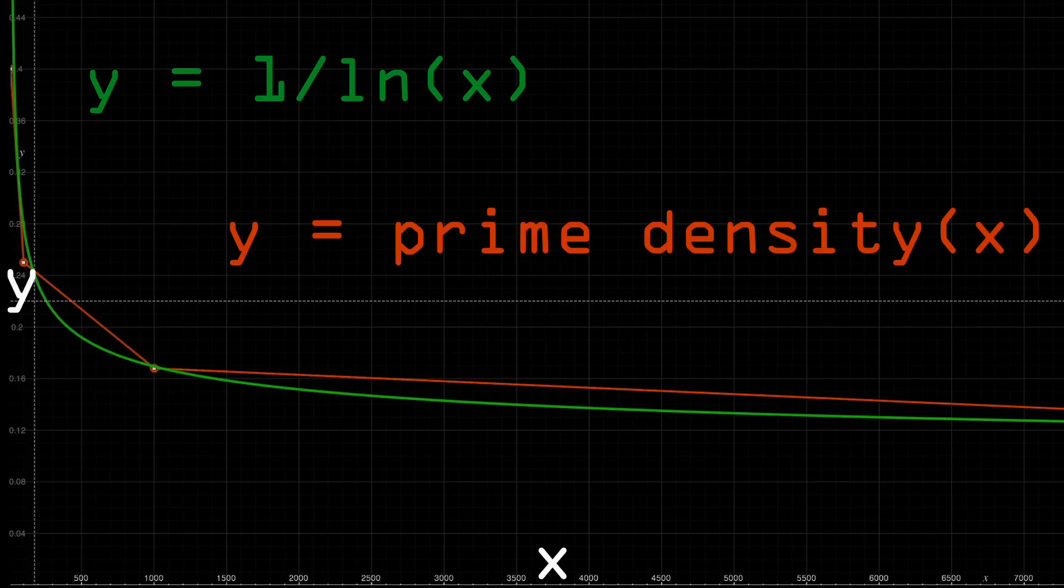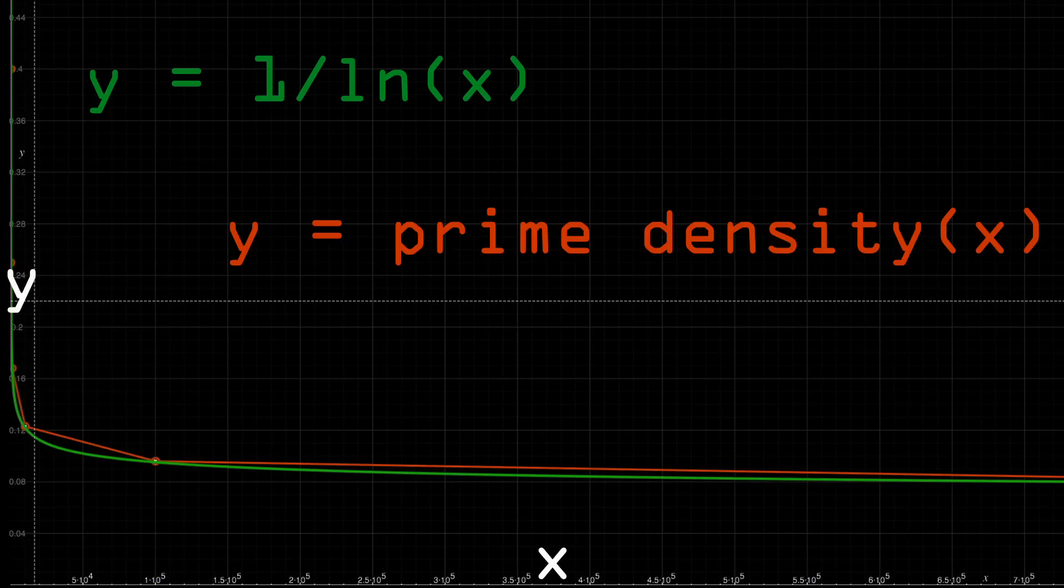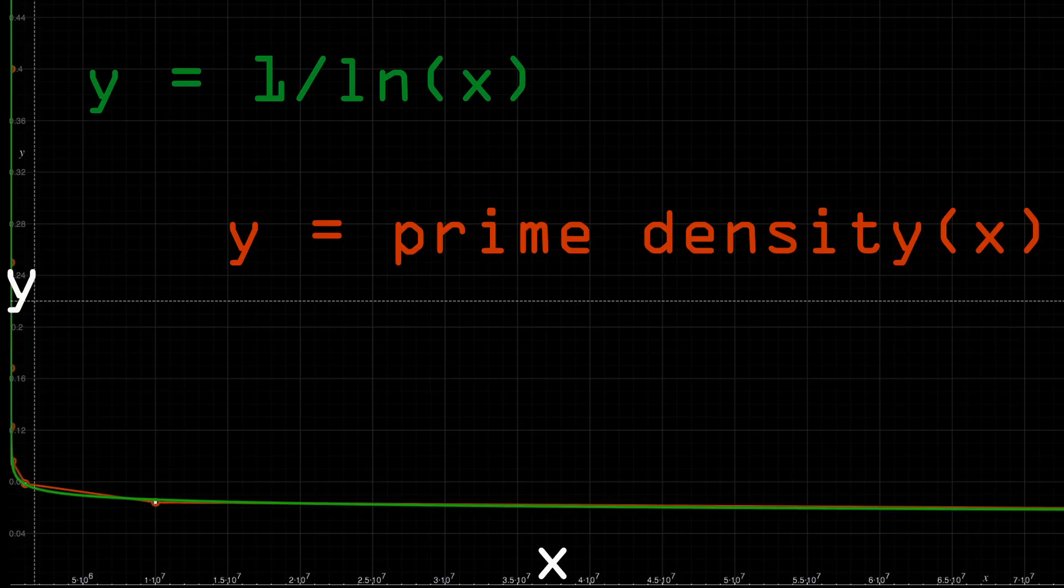And in red is the plot of prime number density up to x. As we zoom out they approach each other. The further we zoom out the more accurate the green estimate becomes.